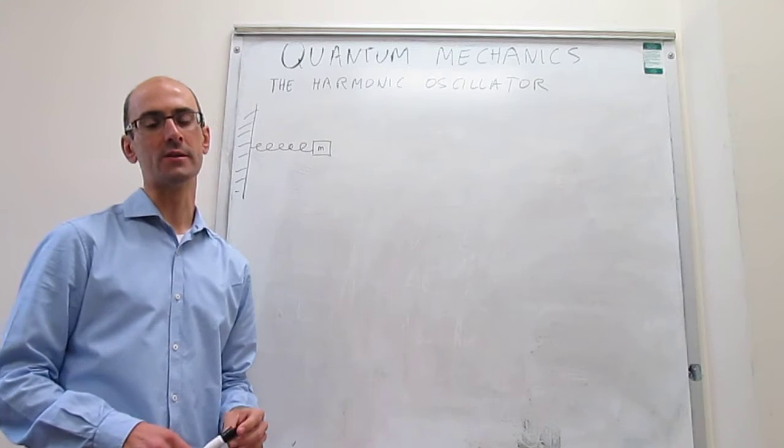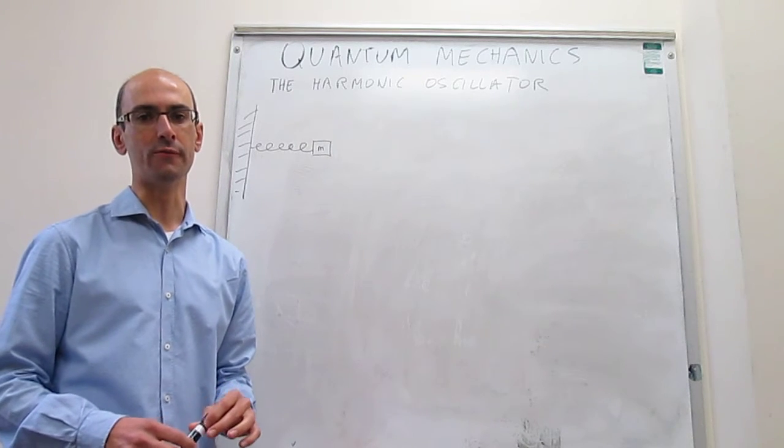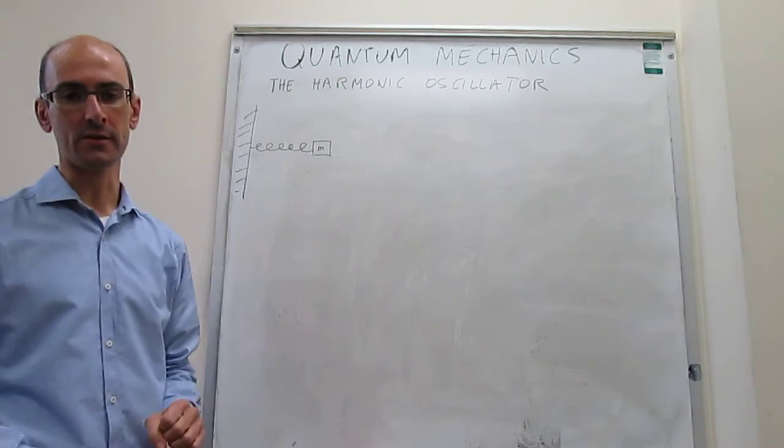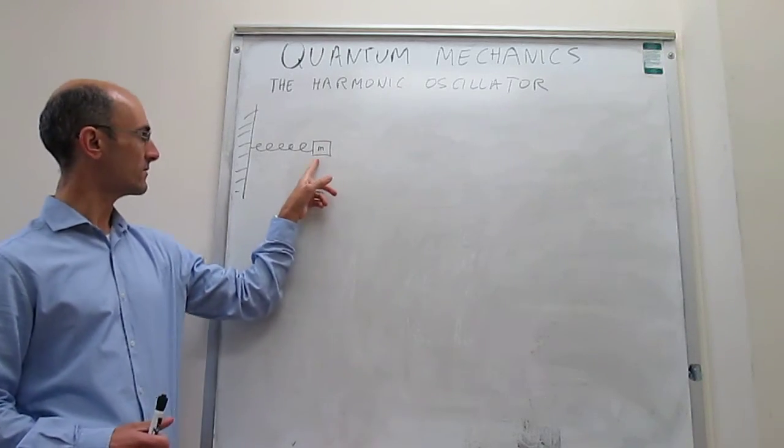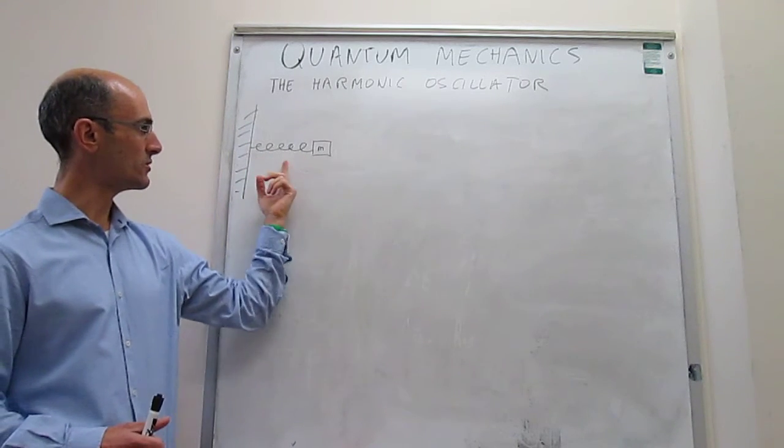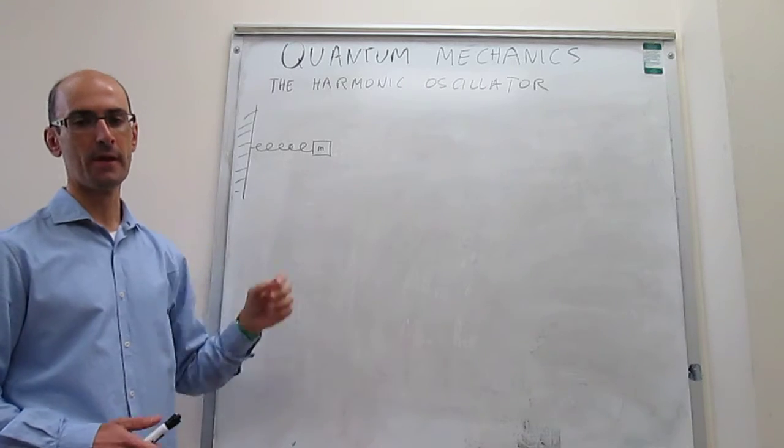In a prior video, we set up and solved the Schrödinger equation for a system called the harmonic oscillator. This is how a schematic of the harmonic oscillator looks like. It's simply a mass connected to a rigid wall through a spring, and the motion is just in one dimension, an oscillation.